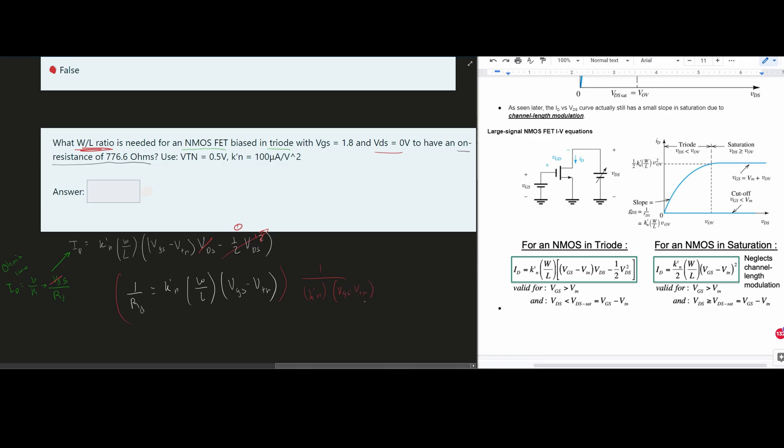That way, we can get it to cancel out on this side, then have it be on the other side. So that way, we can solve for our W over L. And in doing this, we are going to get that our answer is approximately 9.9. And that's how we would go about solving this problem.